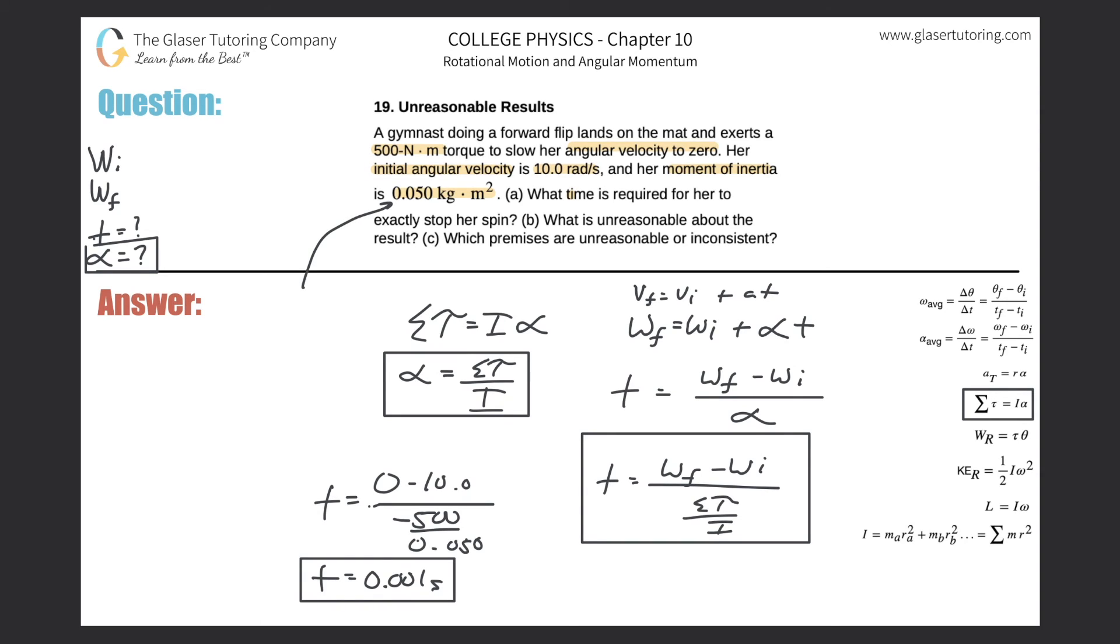And what is the unreasonable part? Most likely the moment of inertia - this is quite low. Even if you approximate her body as a rod rotating around, and you look at that formula of mr squared, or even if you take it as just a disc rotating - mr squared over two - you're going to notice that given the mass and the length, you're not going to come up with a value of 0.05. So that would be the unreasonable premise.